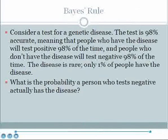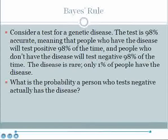Consider a test for a genetic disease. The test is 98% accurate, meaning that people who have the disease will test positive 98% of the time, and people who don't have the disease will test negative 98% of the time. Imagine also that the disease is rare — only 1% of people in the population have the disease. What is the probability of a person who tests negative actually having the disease? This would also be known as a false negative.